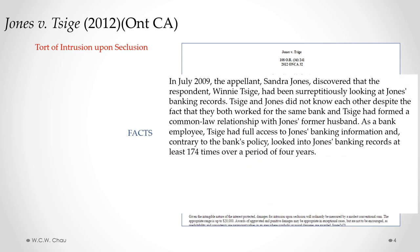In that case, the facts involve a Sandra Jones. Sandra Jones had sued Winnie Tusig. Both of them worked at Bank of Montreal. Winnie had surreptitiously looked at Sandra's banking records because Winnie, as part of her job, had access to these records. Sandra and Winnie didn't know each other, but Winnie did know that Sandra was now living with her former husband. So Winnie was curious about Sandra's financial situation and used her access as an employee to look at Sandra's banking records at least 174 times over a period of four years.